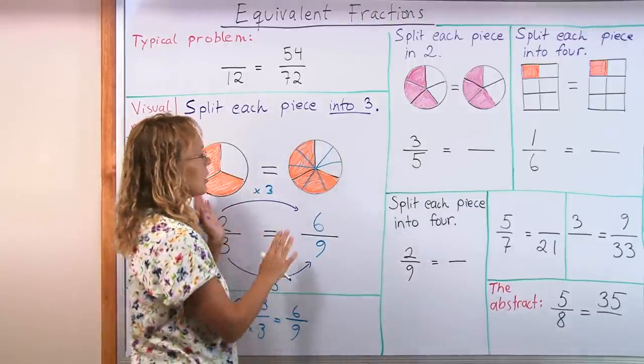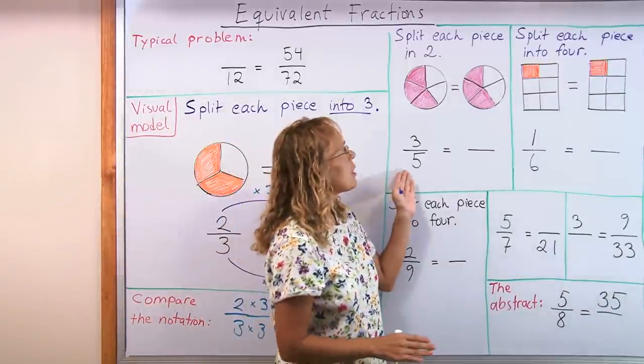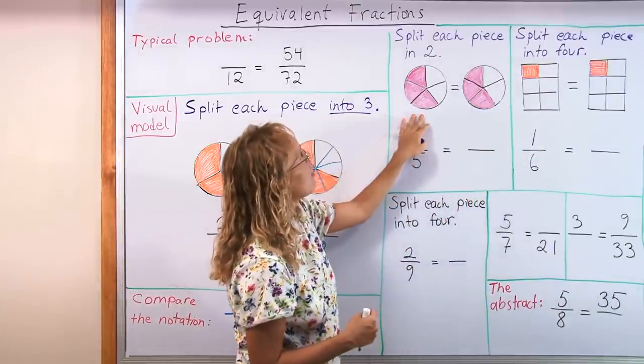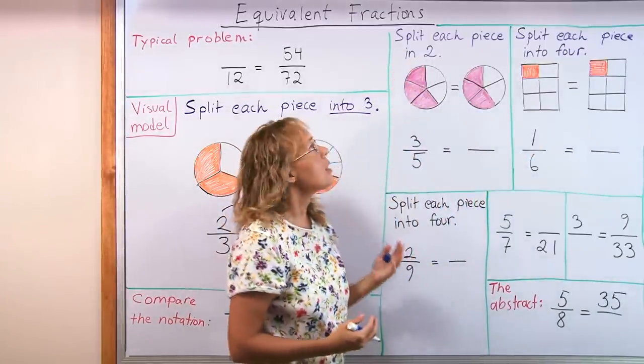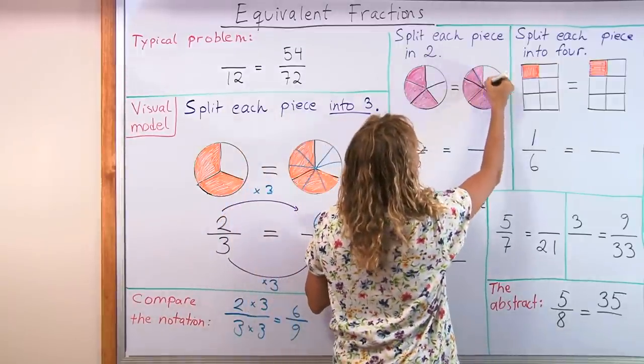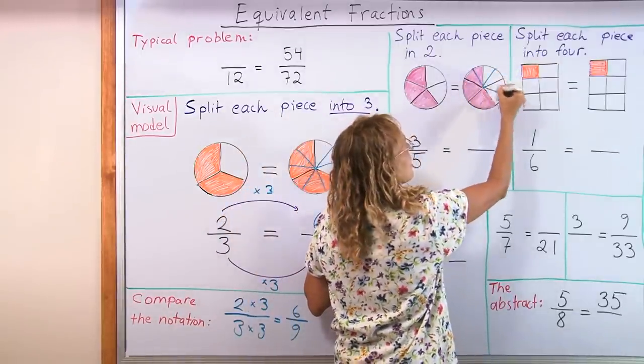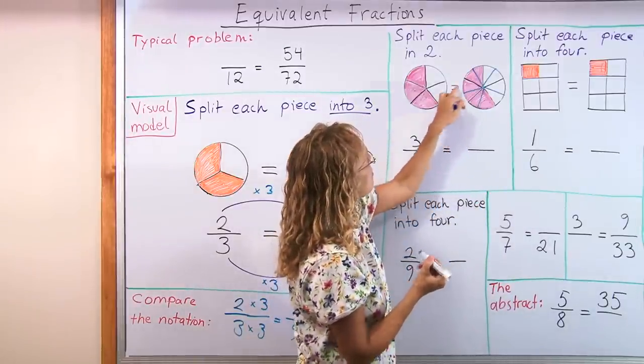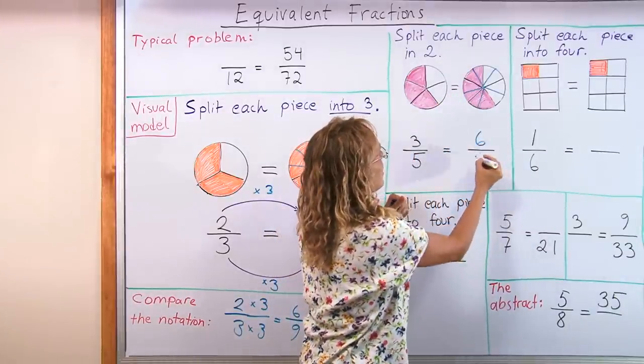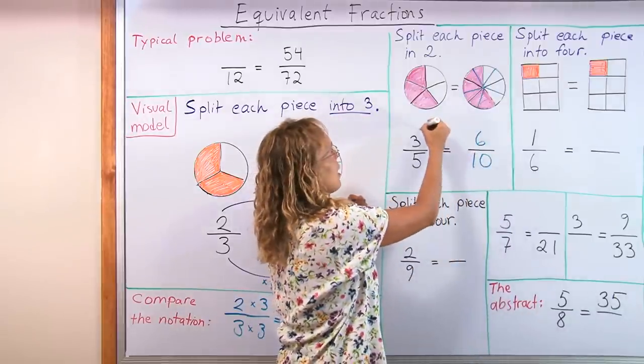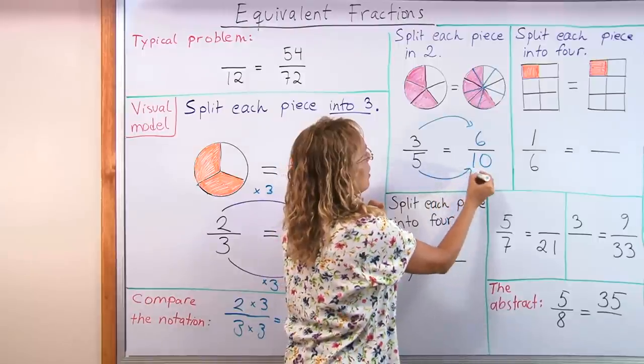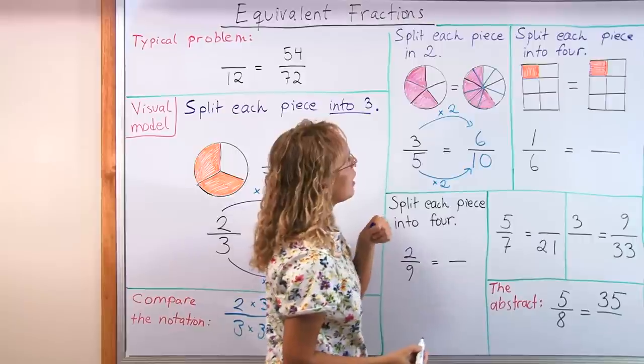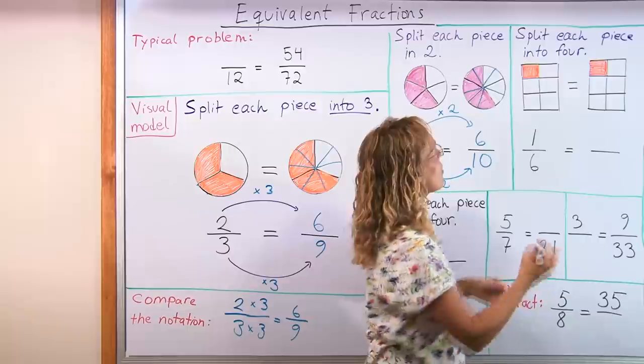Now, after students understand the basic idea, it's time for them to practice with more visual exercises like these ones here. They would have a picture here and instructions what to do. Split each piece into two new pieces. So here we just split it like this. And then check what we have. We have here now six colored pieces and ten total. So it is 6/10. And then they can write the arrows, draw the arrows, and put this times 2 times 2.